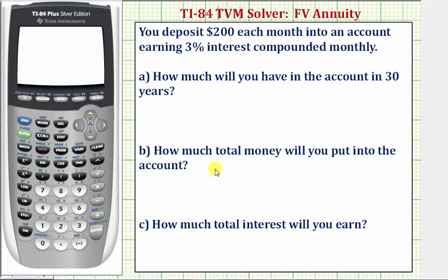Part B: how much total money will you put into the account? And Part C: how much total interest will you earn? We'll solve this using the TVM solver.